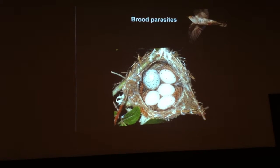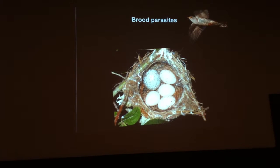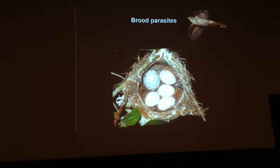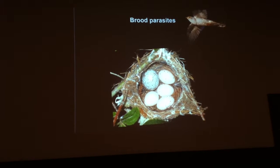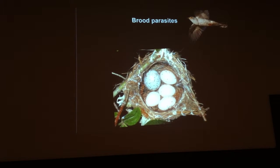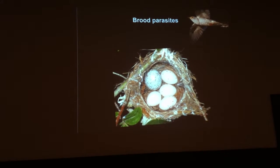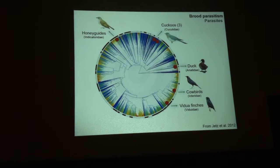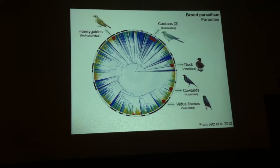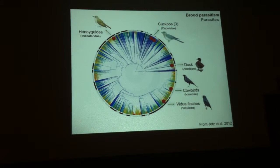Brood parasitism is very common in the avian community and parasitism rates can be as high as 63% within a population, so it is really very common. It's also very common because it's a widespread strategy. Brood parasitism has evolved seven times in birds independently.